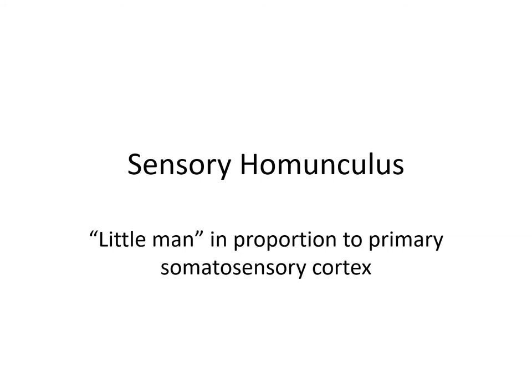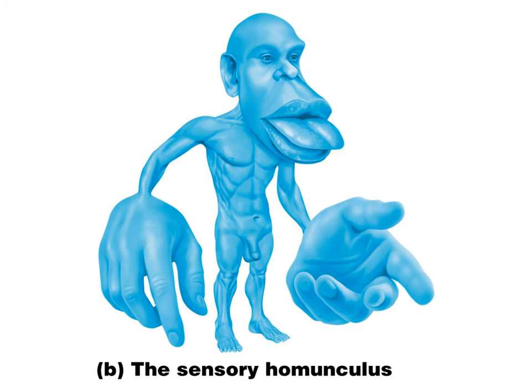We can show this in an illustration called a sensory homunculus — 'homunculus' means little man. His body is in proportion to the primary somatosensory cortex, so where his body is exaggerated indicates where there is more cortical devotion to those receptors. Lips, tongue, and fingertips are greatly exaggerated, while the body torso is not. The head and hands are really the areas most exaggerated in the sensory homunculus.